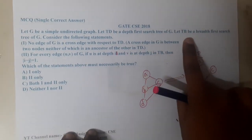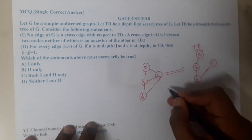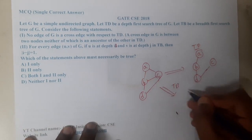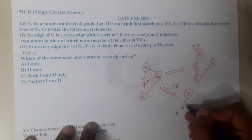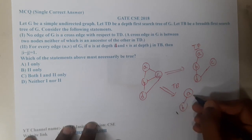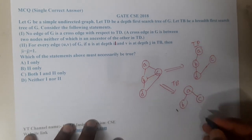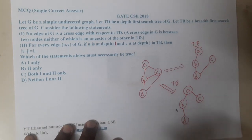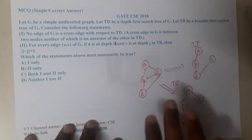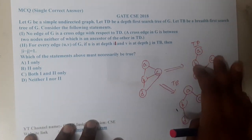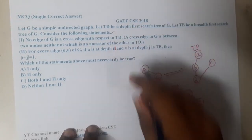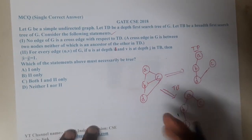Let TB be the breadth first search. From A we go to B and from A we go to C; after that from C we go to D. Now we have drawn the original graph, the depth first search, and the breadth first search — the first three constructions are done.